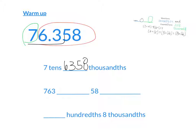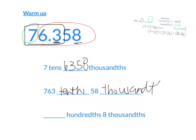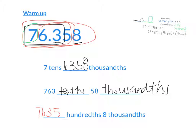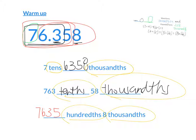This is what unit form is all about — it's splitting the number in different ways but saying the place value. We could also split it like this: 763 tenths and 58 thousandths. What about this last one? That would be splitting it up until the hundredths. 7,635 hundredths and eight thousandths. Do you see how you could split it in many different ways? What's the most important thing to write when splitting it in different ways? The place. If I didn't write tenths or hundredths or thousandths, would I know what number I'm talking about? No. So it's very important when talking about unit form to include the place value units.